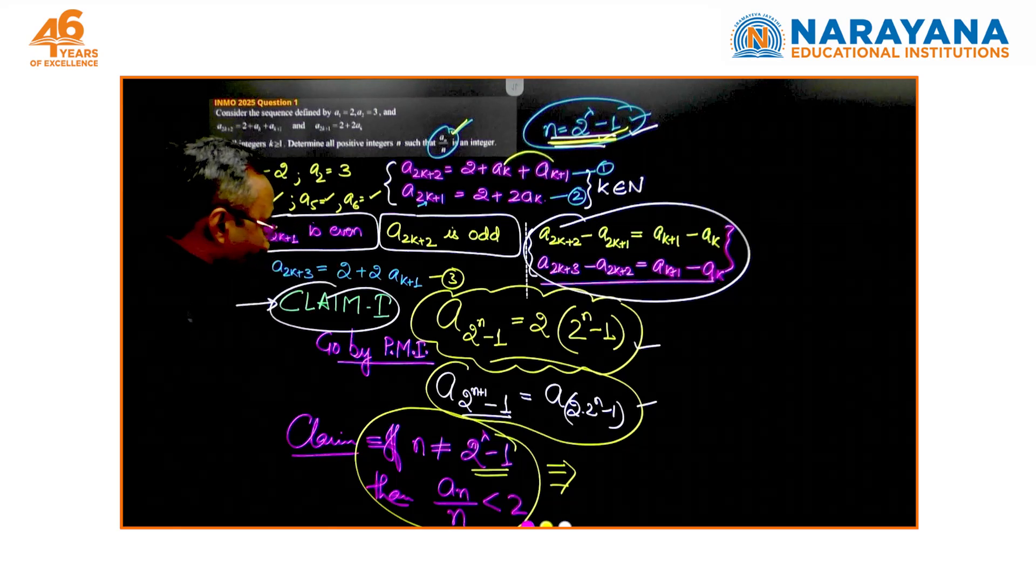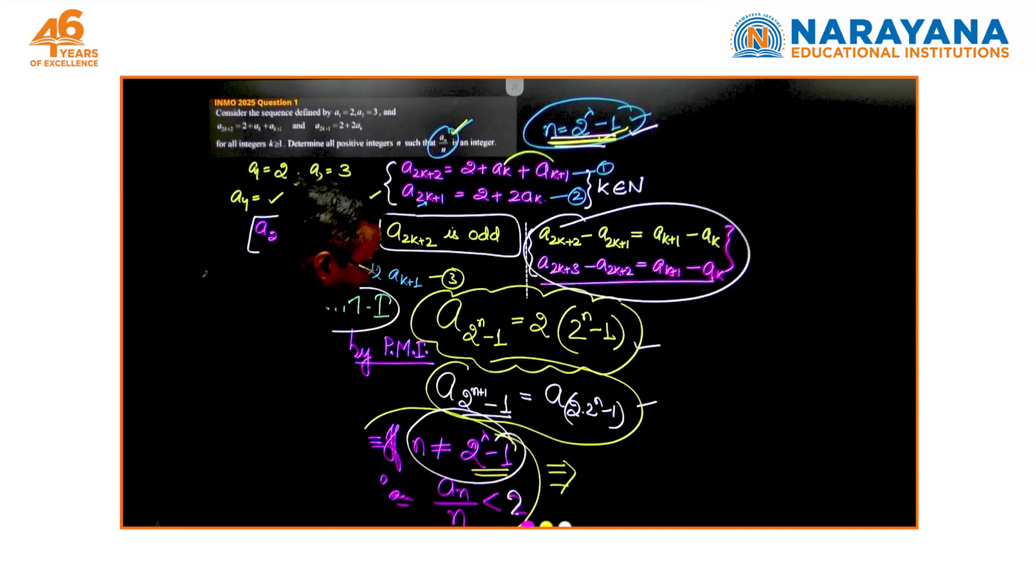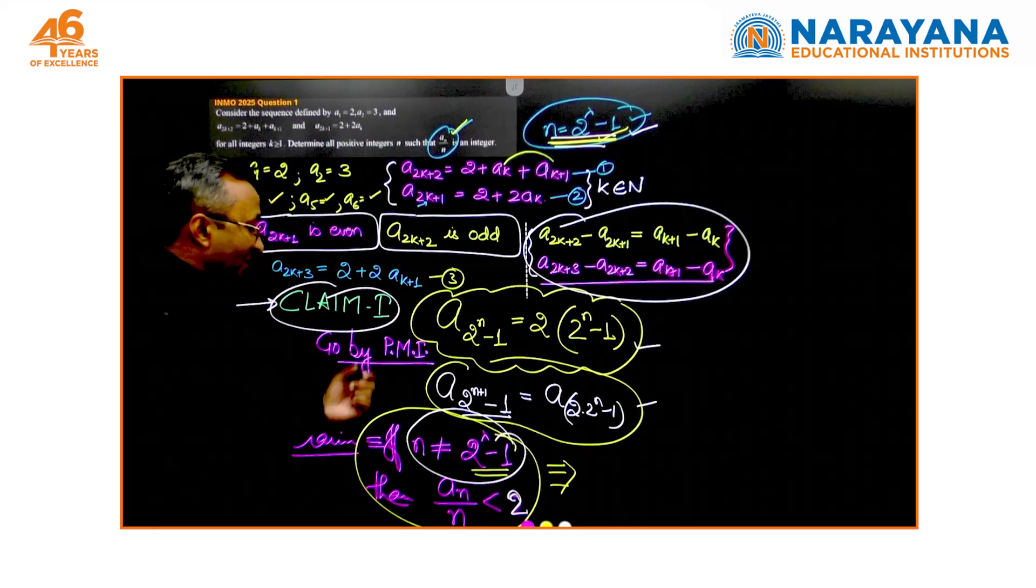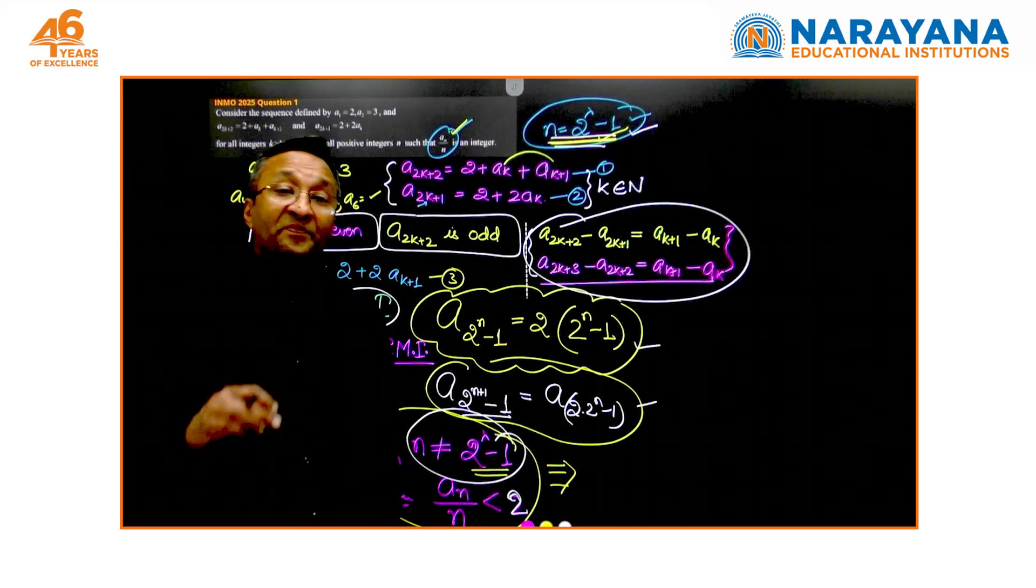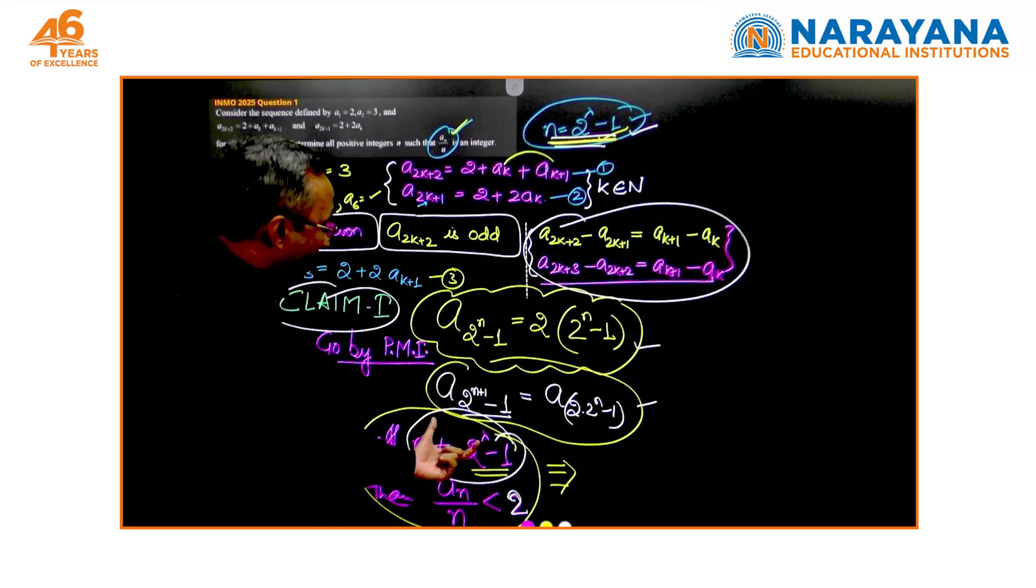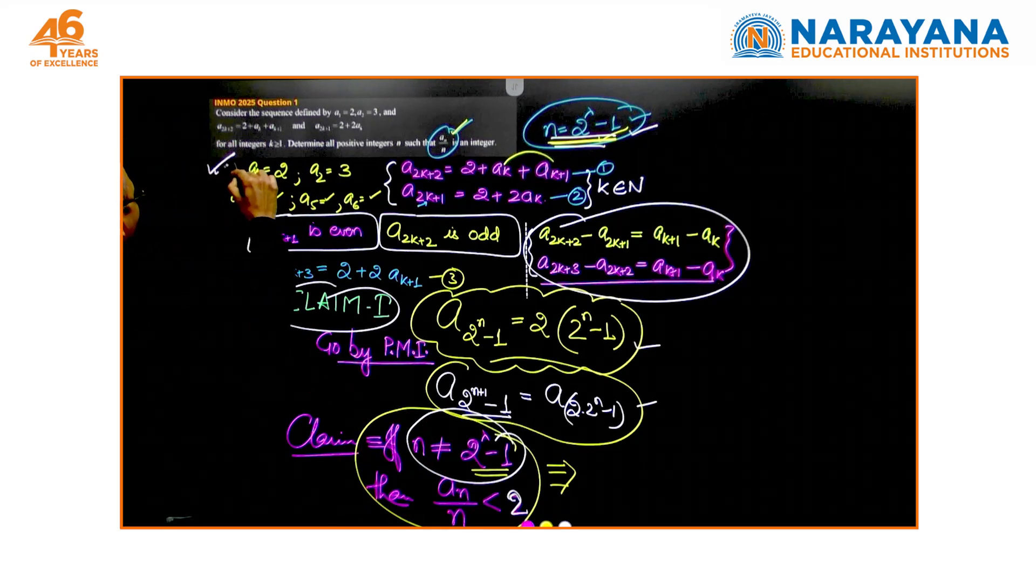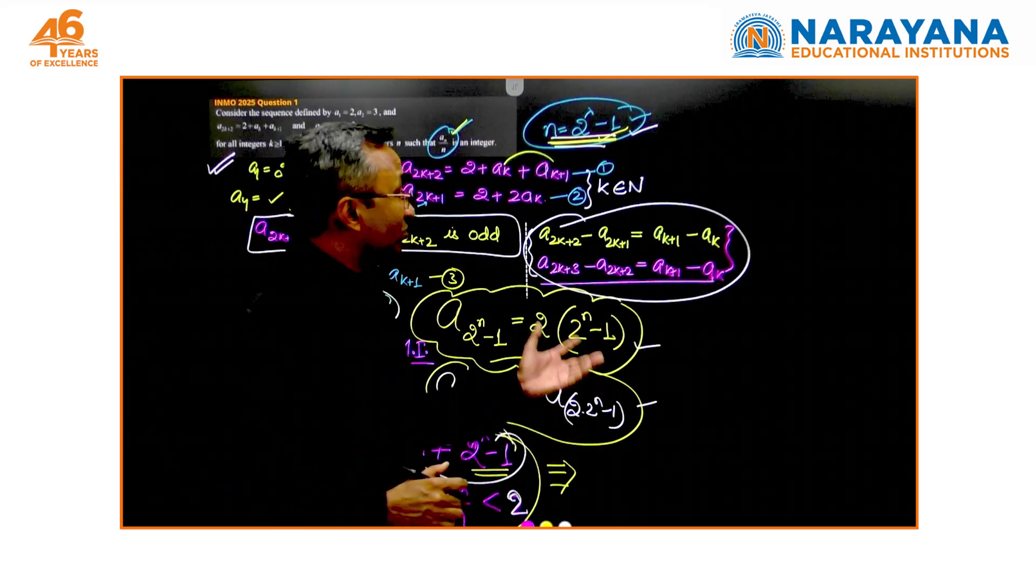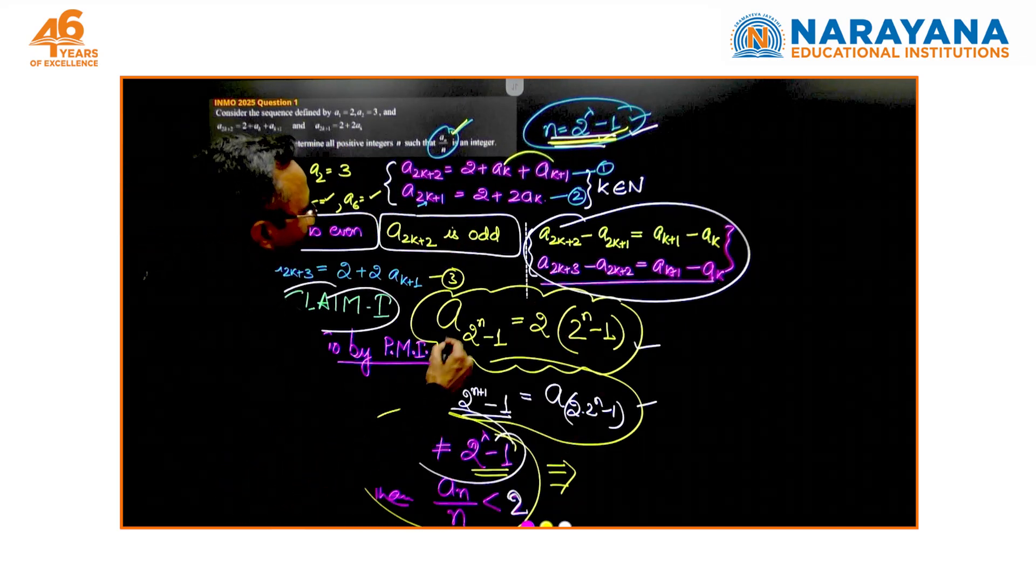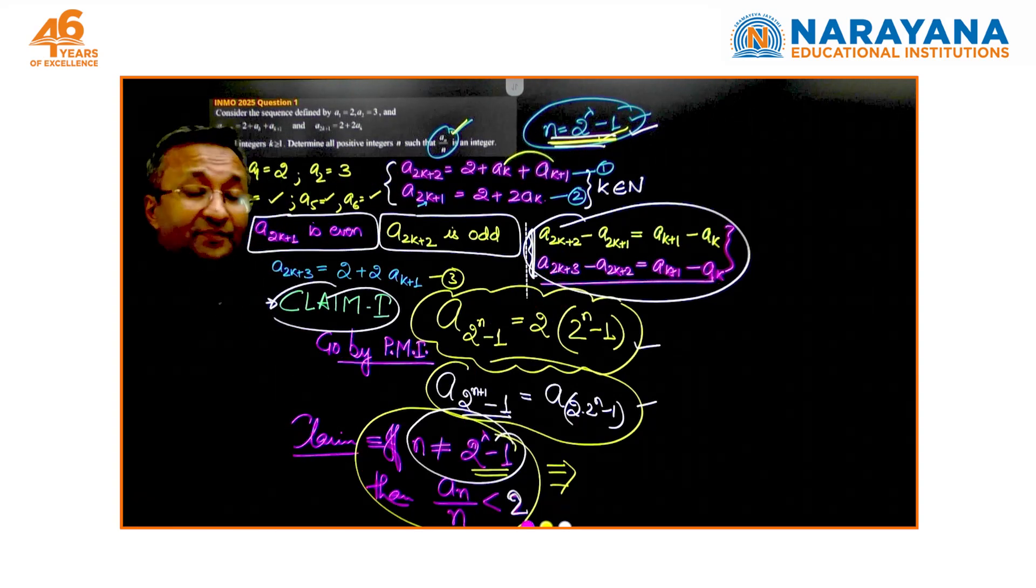But when we come to the other part that there is no other case then we claim that it is less than 2. How do you get the idea of getting less than 2 is again with the initial values you find that all of them are less than 2 and with principle of induction on an inequality you get this result. So this basically was a question of inductive reasoning unless there is a master stroke solution to it which takes you to a different result and proves it.